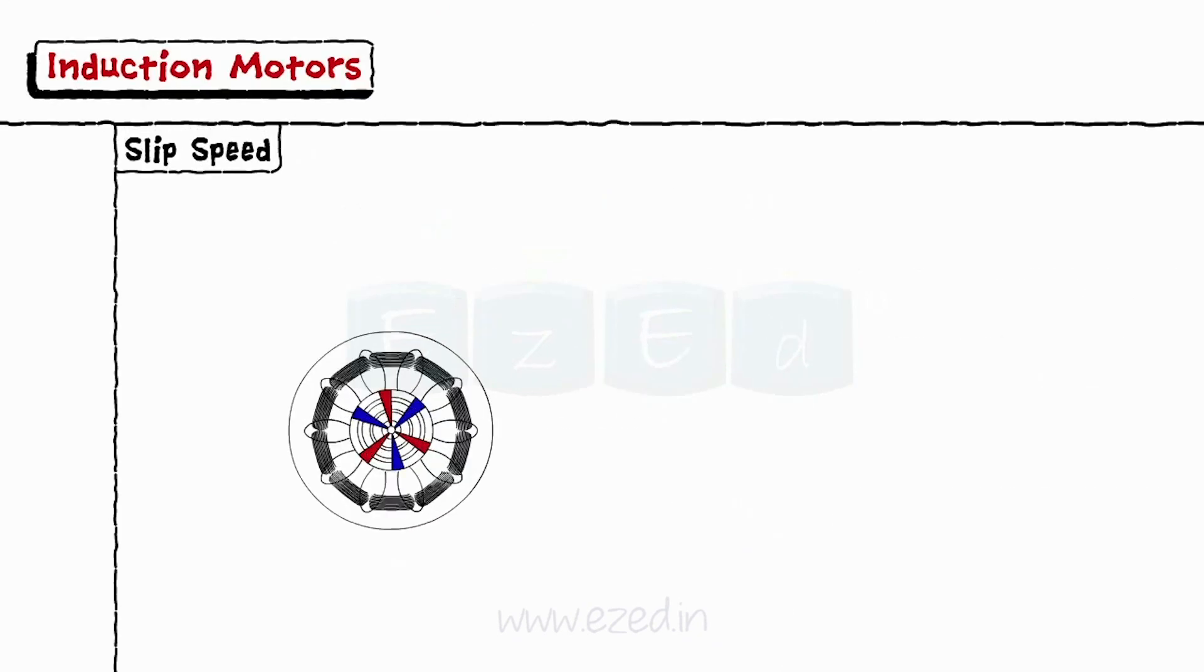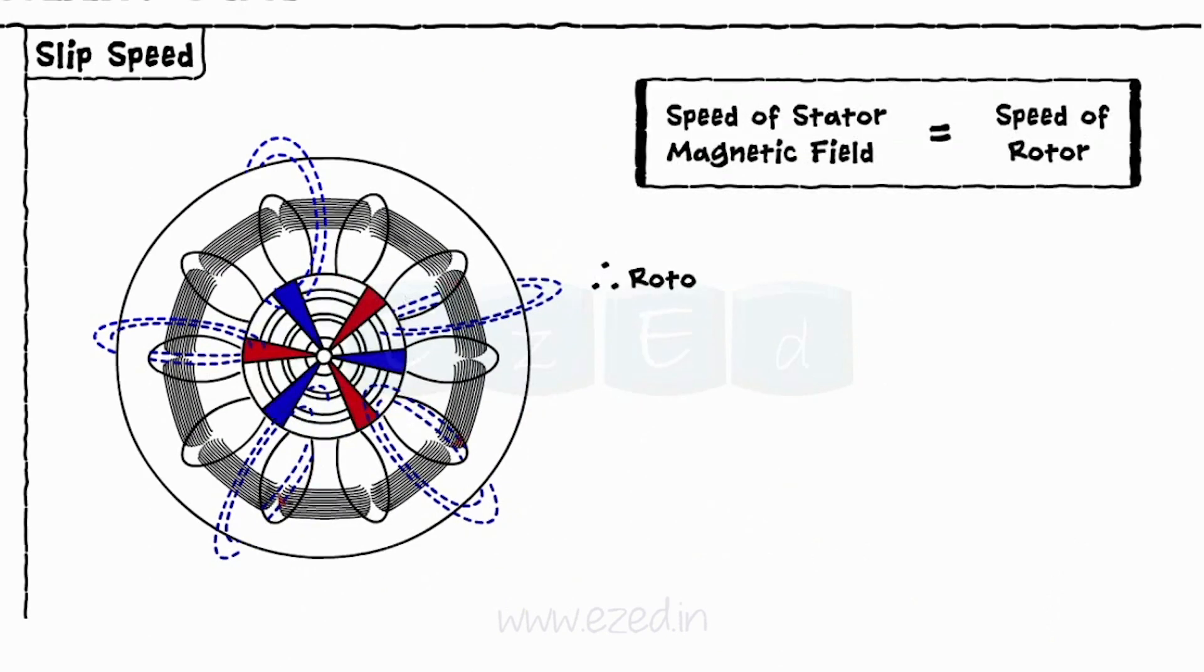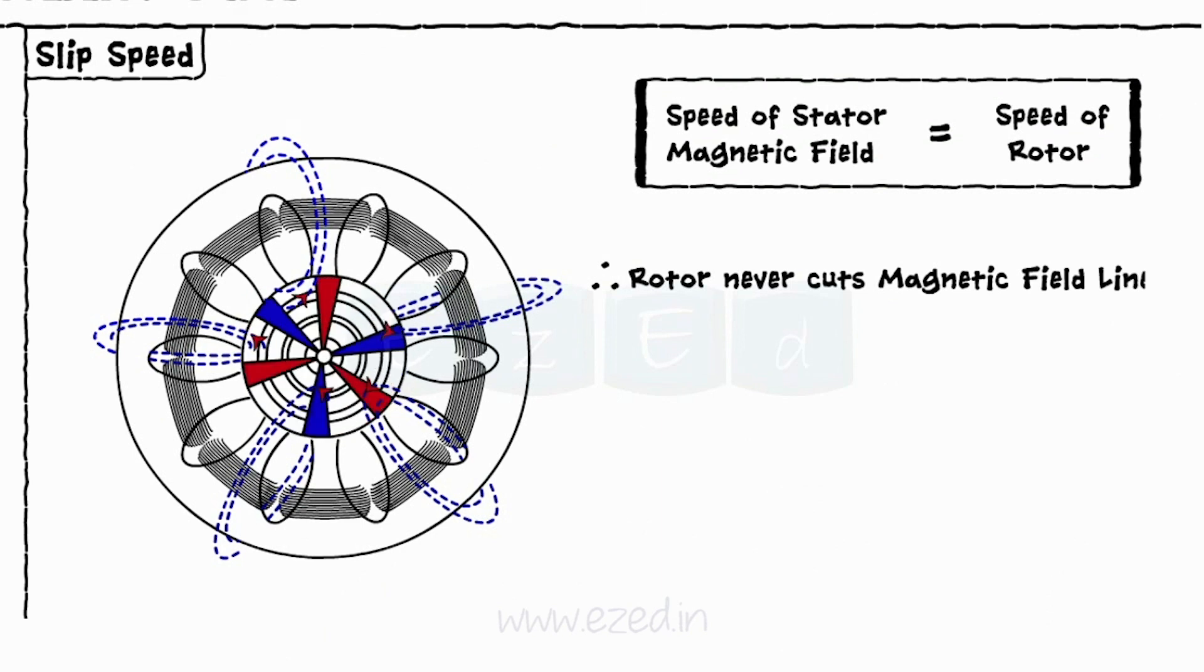If the rotor and the magnetic field of the stator rotate with the same or synchronous speed, rotor bars will never cut the magnetic field lines and there will be no current induced in the rotor.